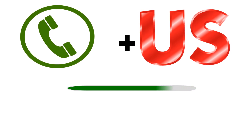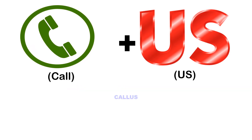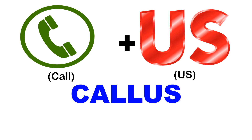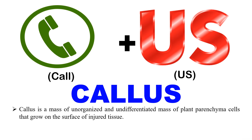Next, two emojis are shown and you have to get the correct scientific term. Time is up — the answer is callus, because the first emoji represents 'coal' and the second represents 'us', making callus. Callus is a mass of unorganized and undifferentiated cells of a plant. It is formed during plant tissue culture.